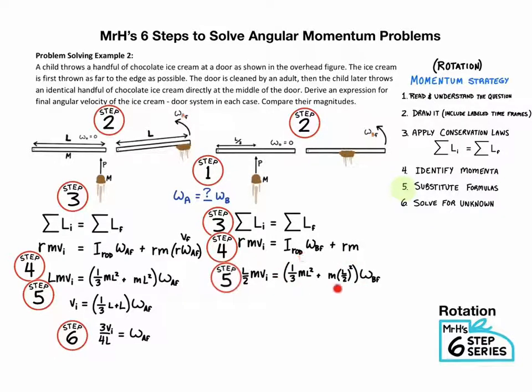This whole entire parentheses right here can be considered one moment of inertia of this entire object all stuck together. If you notice, we could just add them up and it's I times omega final there. And then M's cancel, one of the L's cancels, and you're left with three over five V over L.